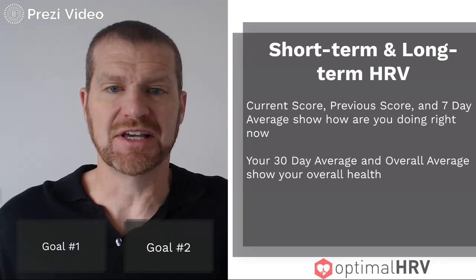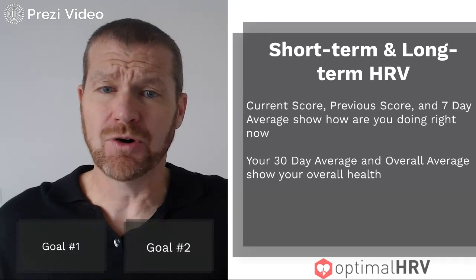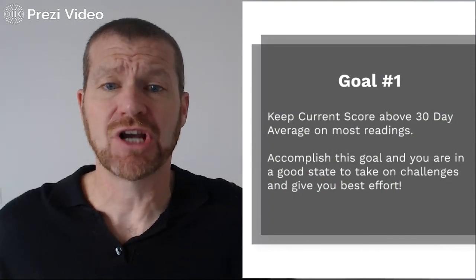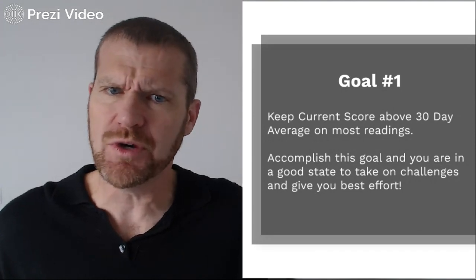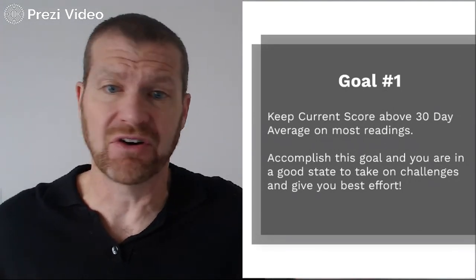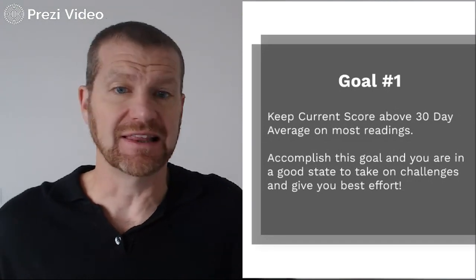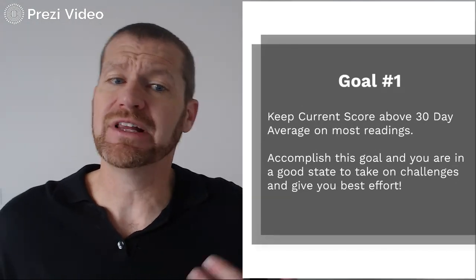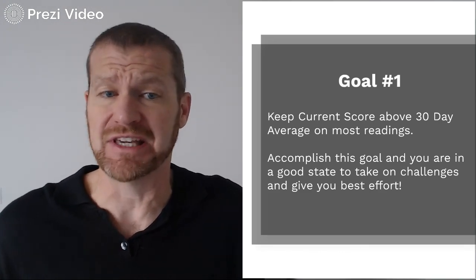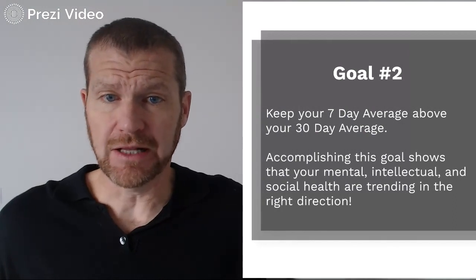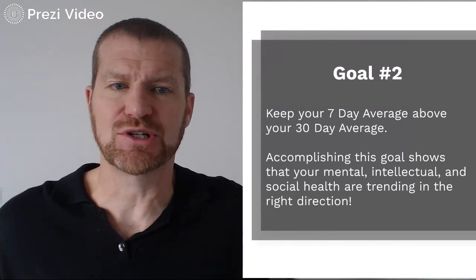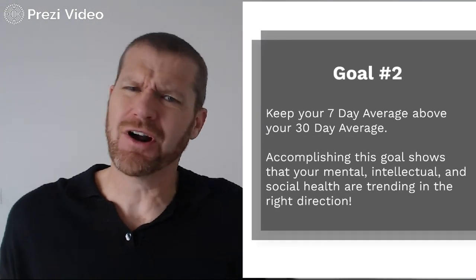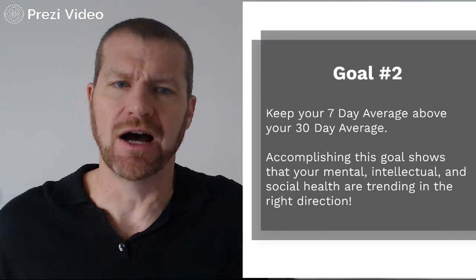I want to give you two goals as ways to really look at your daily readings. Goal number one is to try to keep your current score above your 30-day average on most of your readings. You won't achieve this every time, but the 30-day average gives you a baseline of overall health. When you accomplish this goal, you're really in a good state of being and ready to take on challenges and give your best effort. The second goal is to try to get your seven-day average above the 30-day average, showing you're doing things that will improve your health over time.